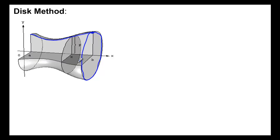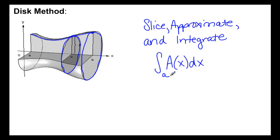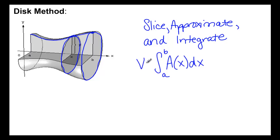When you do this, it makes a solid, and every cross-section of that solid is a circle. Therefore, we can use the slice, approximate, and integrate method. As we talked about before, we know we can find volume if we integrate the area of the cross-sections.